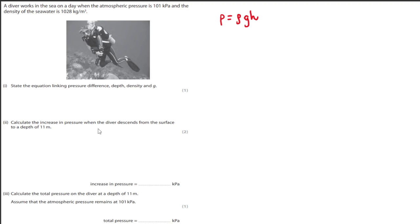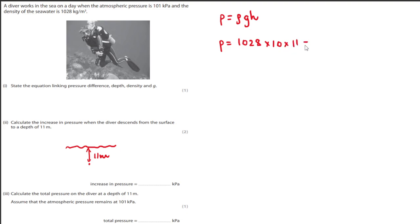Calculate the increase in pressure when the diver descends from the surface to a depth of 11 meters. If this is sea level and the diver is here at 11 meters, we simply do P equals rho GH: density is 1028, G is 10, and H is 11. Put that in the calculator and you should get 113,080, which is about 113 kilopascal.